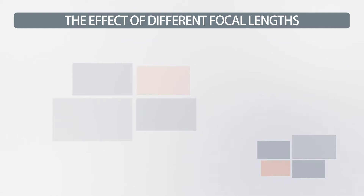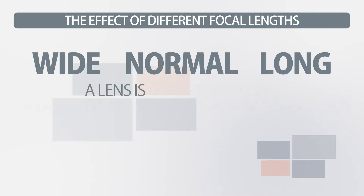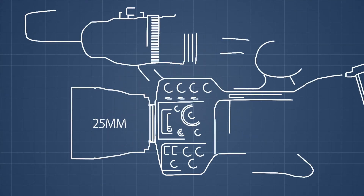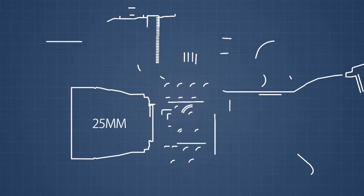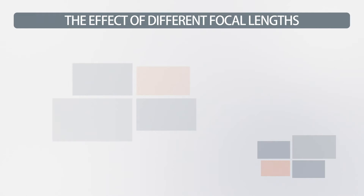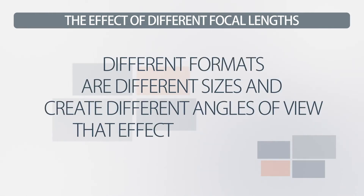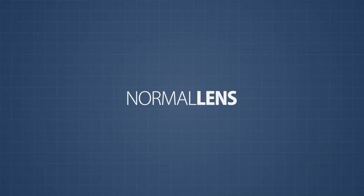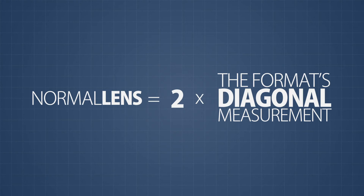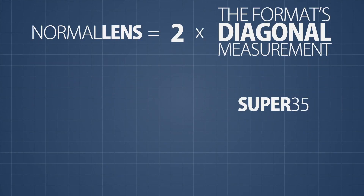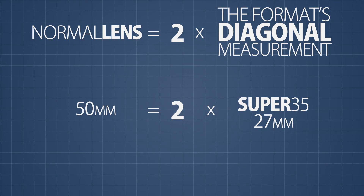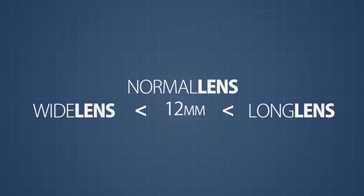One thing you should notice is that while talking about wide, normal, and long lenses, I didn't give any examples of focal length. This is because a lens is considered long or wide depending on the format being shot. Take a 25mm lens, for example. Put it onto a 1/3-inch chip camera and it's going to be a pretty long lens. But put that same 25mm lens onto a Super 35 camera and it would fall into the normal-to-wide category. Different formats are different sizes and create different angles of view that affect the perceived magnification of the lens. In cinematography, a normal lens is defined as one whose focal length is twice the diagonal measurement of the format being shot. For Super 35, the diagonal distance of the film gate is about 27mm, so a normal lens would be a 54mm — or more often rounded to a 50mm. For a 1/3-inch camera, a normal lens would be closer to 12mm. Anything longer than normal would be a long lens, and anything wider would be a wide lens. It changes with the format.